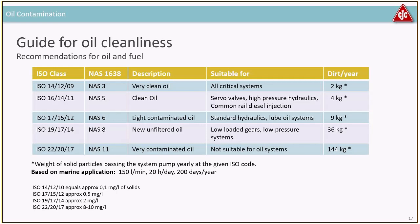Why you want to clean the oil: if you have an ISO class of 19/17/14 — similar to NAS 8 — this is suitable for low-loaded gears and low-pressure hydraulic systems. But running a system at 150 litres per hour, a litre-per-minute pump, 20 hours a day, 200 days a year, will circulate 36 kilos (about 70 pounds) of dirt per year over the main pump, causing wear. With cleaner oil at 16/14/11 or NAS 5, you'd only circulate 4 kilograms (8 pounds) — a big difference. Cleaner oil is suitable for servo valves, high-pressure hydraulics, and common rail diesel.